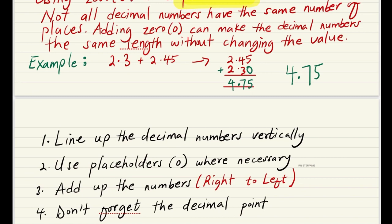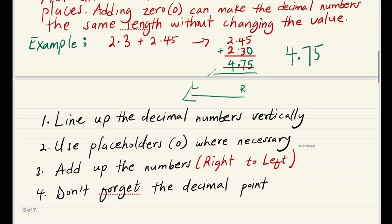When you get your question, you have to remember to: line up the decimal numbers vertically; use placeholders, that is 0, when necessary; add up the numbers from right to left. So as you realize from our previous examples, we added in this direction, from the right side to the left side. And the last thing is to never forget the decimal point.